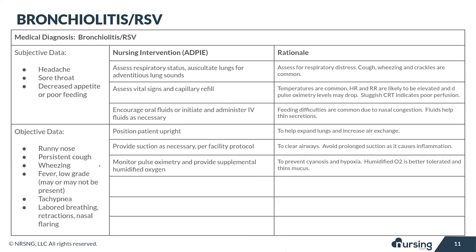As we are trying to improve their breathing, we need to be monitoring their oxygen saturations very closely. The parameters for this are going to be set by the hospital, but normally you want to keep oxygen saturations above 90%. So we need to apply supplemental oxygen if they are below that. Most of the time, that's going to need to be humidified oxygen — kids tolerate it so much better and it helps thin that mucus out.